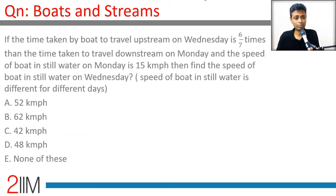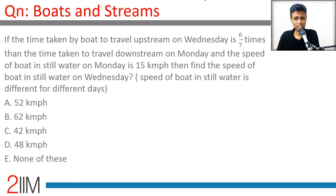The time taken by the boat to travel upstream on Monday is 6/7 of the time taken to travel downstream on Monday. The speed of the boat in still water on Monday is 15 kilometers per hour. The time taken for upstream on Wednesday is also 6/7 of the time taken downstream on Monday. Find the still water speed on Wednesday.